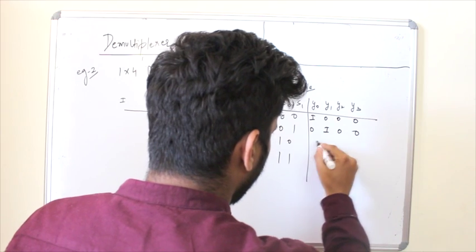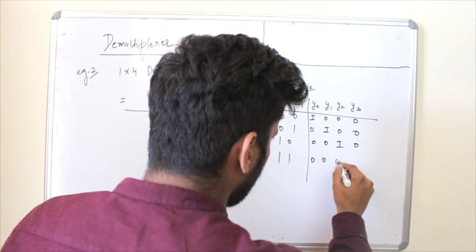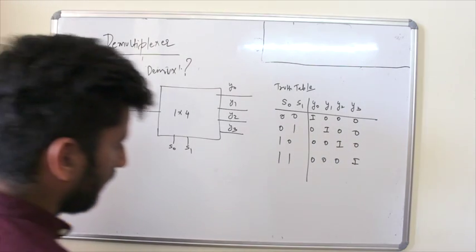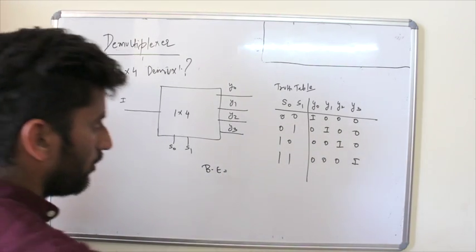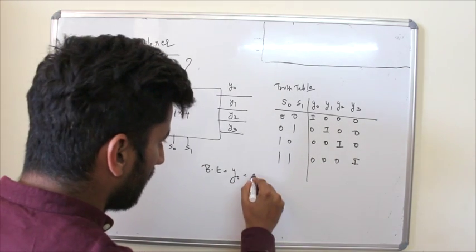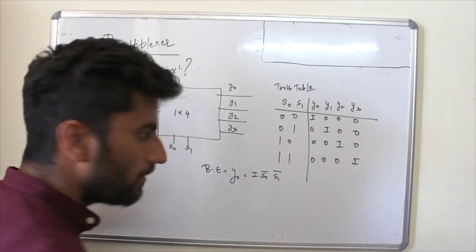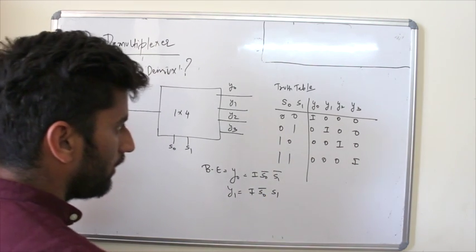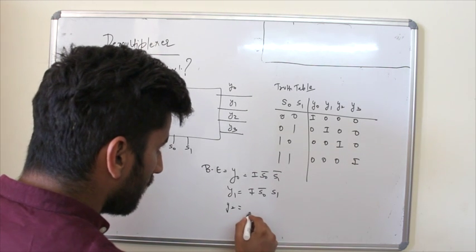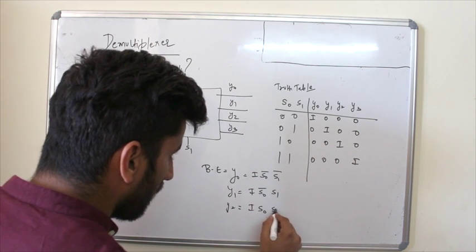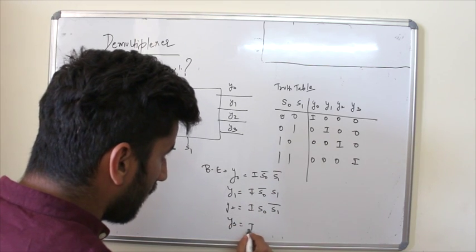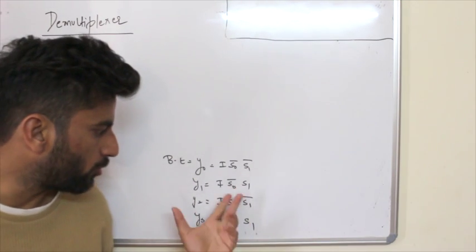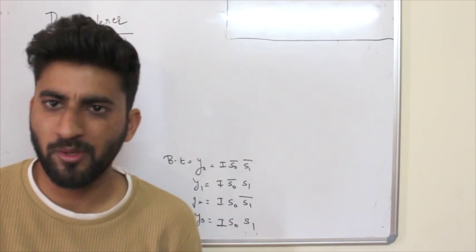Then y1, after that y2, and after that y3. Okay, so finally your expressions, that is boolean expression, which is y0 is i s0 bar s1 bar. What about y1? y1 is i s0 bar s1. And then y2 is i s0 s1 bar. And y3 is i s0 s1. Okay.